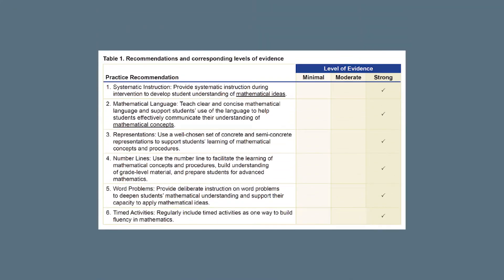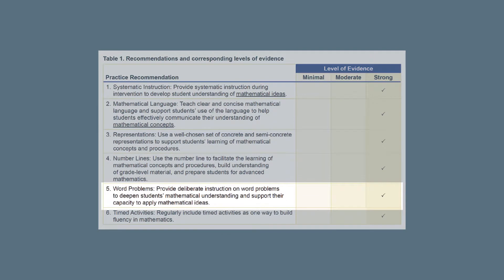Recommendation 5 of the What Works Clearinghouse Practice Guide, Assisting Students Struggling with Mathematics: Intervention in the Elementary Grades, is to provide deliberate instruction on word problems to deepen mathematical understanding and to support students' capacity to apply mathematical ideas. The What Works Clearinghouse and Expert Panel assigned a strong level of evidence to this recommendation, meaning there is consistent evidence that meets WWC standards and that the practice improves outcomes for a diverse student population.